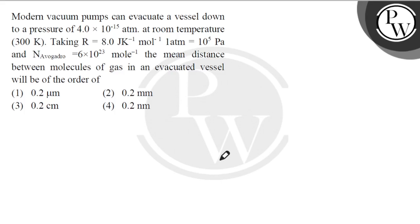Hello, let's read the question. The question says: modern vacuum pumps can evacuate a vessel down to a pressure of 4×10⁻¹⁵ atm. In the atmosphere at room temperature 300 Kelvin, taking R = 8.314 J/(K·mol), one atmosphere = 10⁵ Pascal, and Avogadro's number = 6.023×10²³ per mole, the mean distance between the molecules of gas in an evacuated vessel will be of the order of?